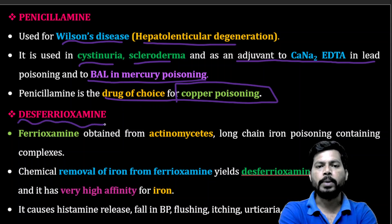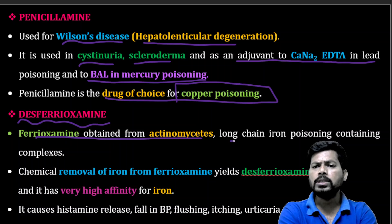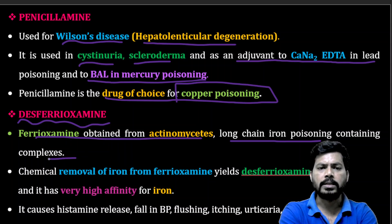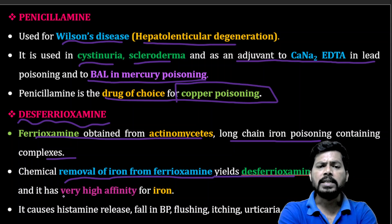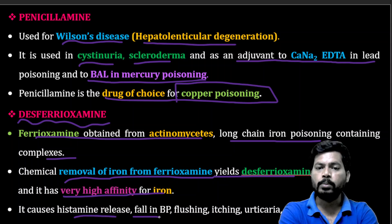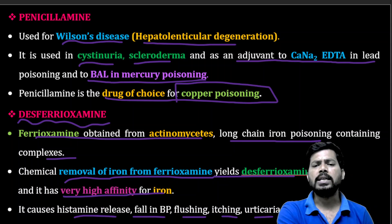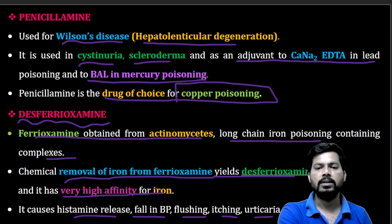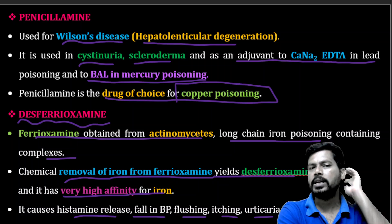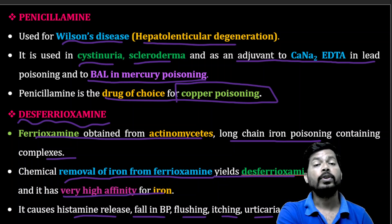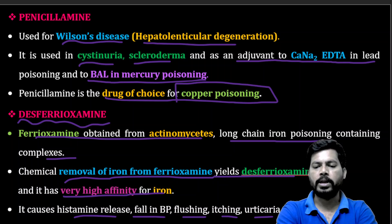Desferioxamine is obtained from actinomycetes as a long-chain iron-containing complex. Chemical removal of iron from ferioxamine yields desferioxamine, which has very high affinity for iron. Its side effects include histamine release, fall in blood pressure, flushing, itching, urticaria, and rashes.